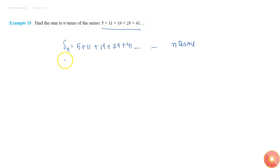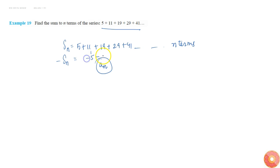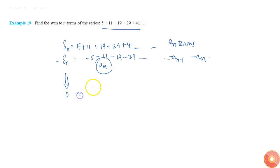In order to do this, we need to find the nth term aₙ. What I'll do is write Sₙ and try to subtract consecutive terms: subtract 5 from 11, minus 11 from 19, and 19 from 29, 29 from 41, and so on.